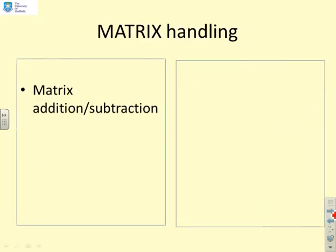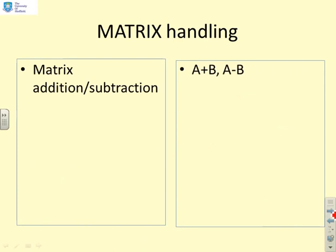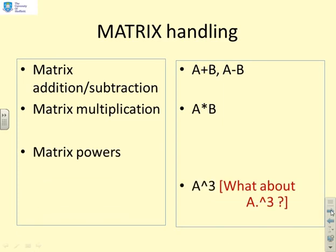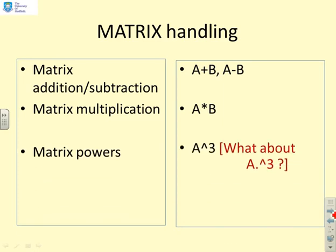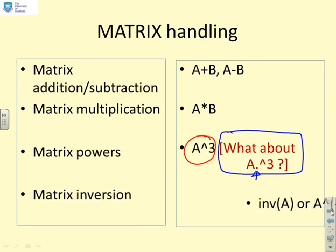In summary: addition, subtraction, and multiplication work exactly as on a piece of paper. You can also compute powers — writing A^3 gives A to the power 3. You might want to investigate what the dot notation A.^3 does, as it has special element-wise functionality. Matrix inversion can also be performed using the appropriate commands.